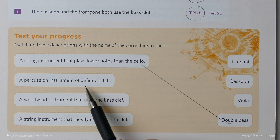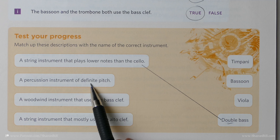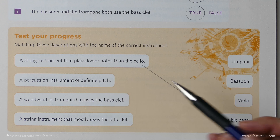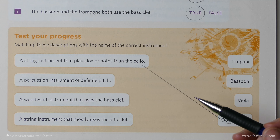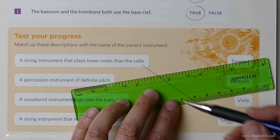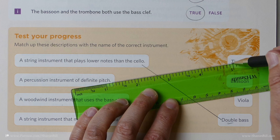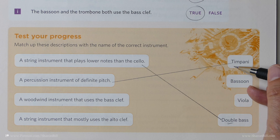Now, which percussion instrument plays in definite pitch — that's tuned — and hopefully my little story will have helped you to remember it's the timpani, otherwise known as the kettle drum.